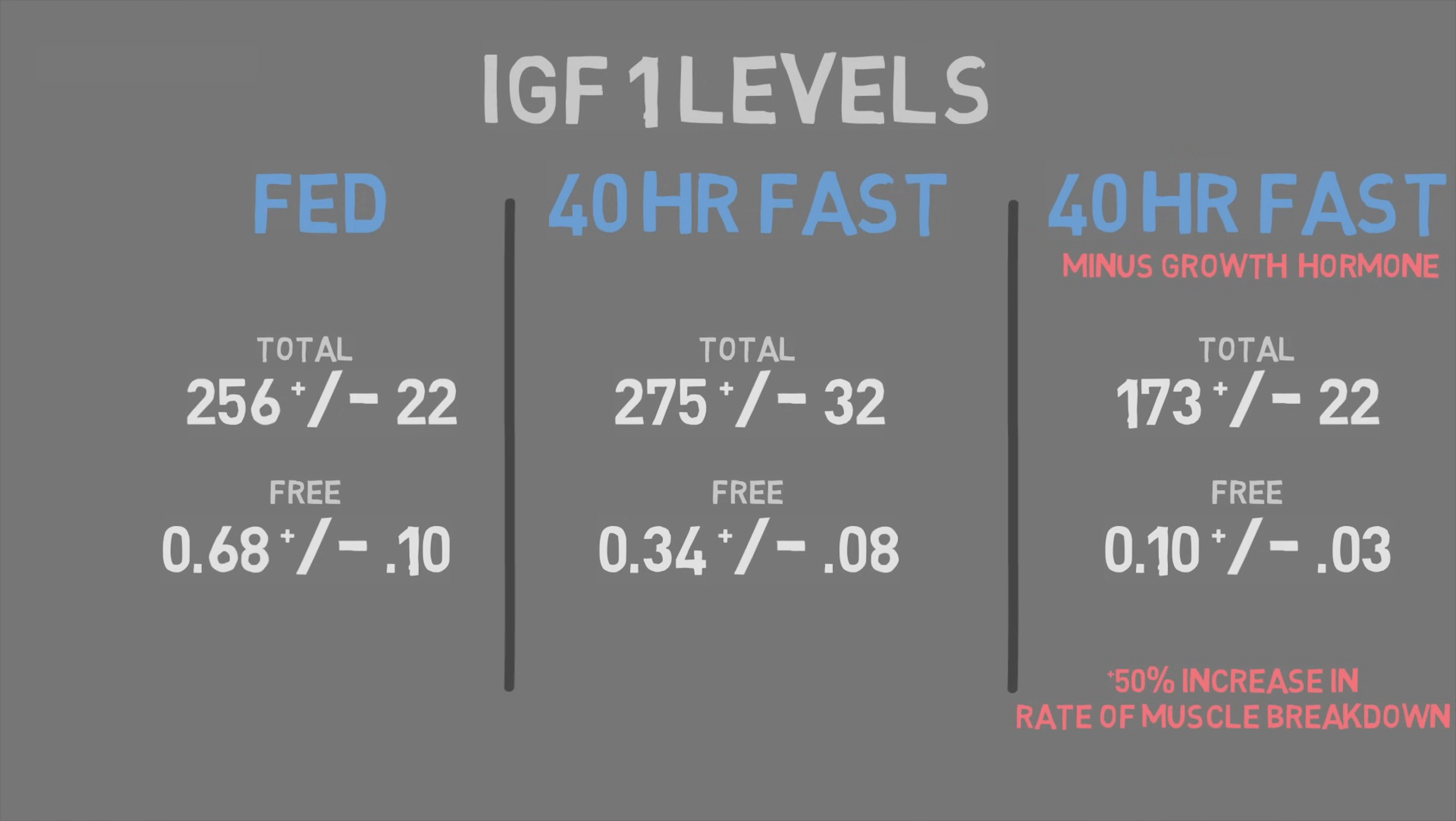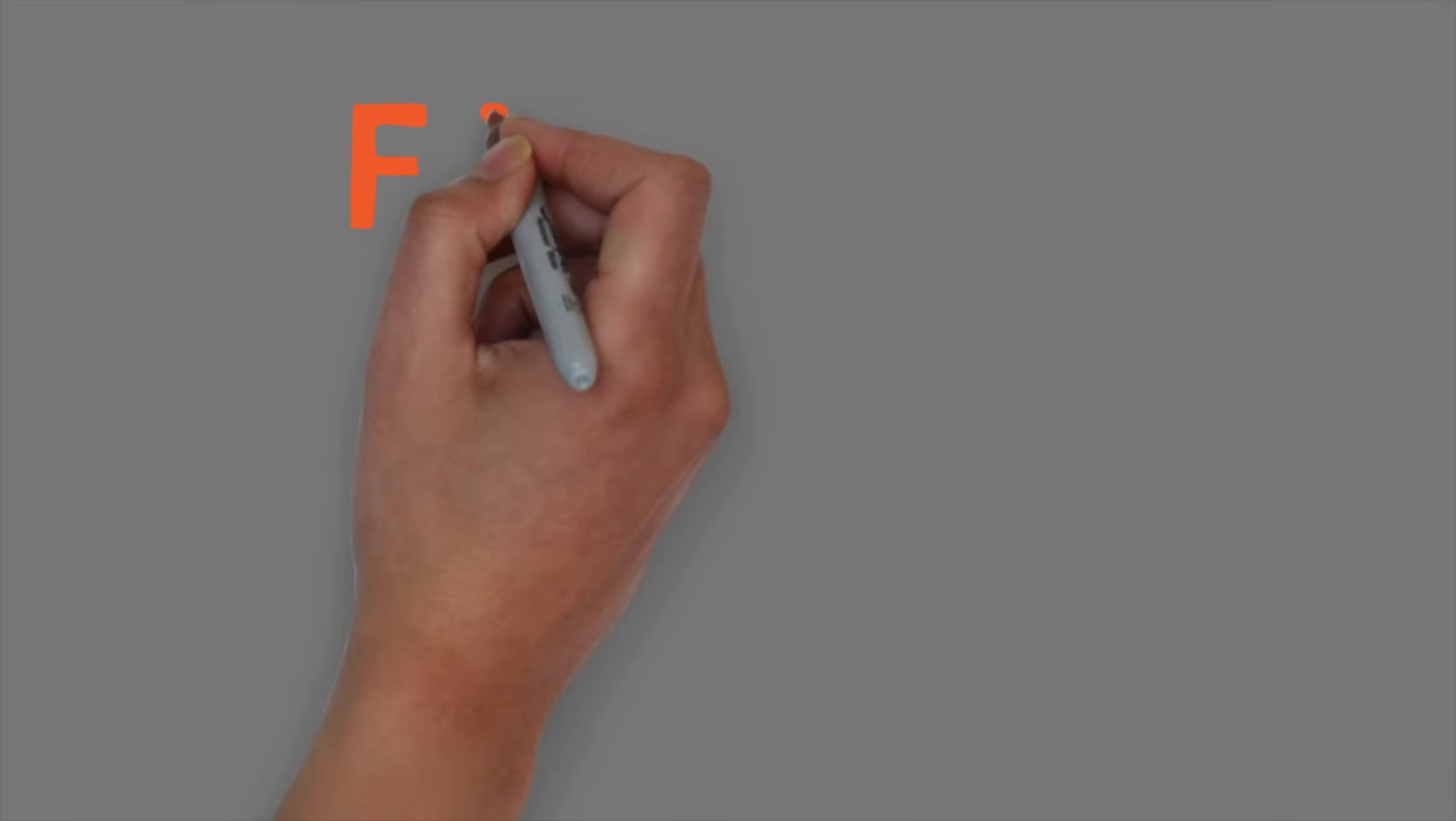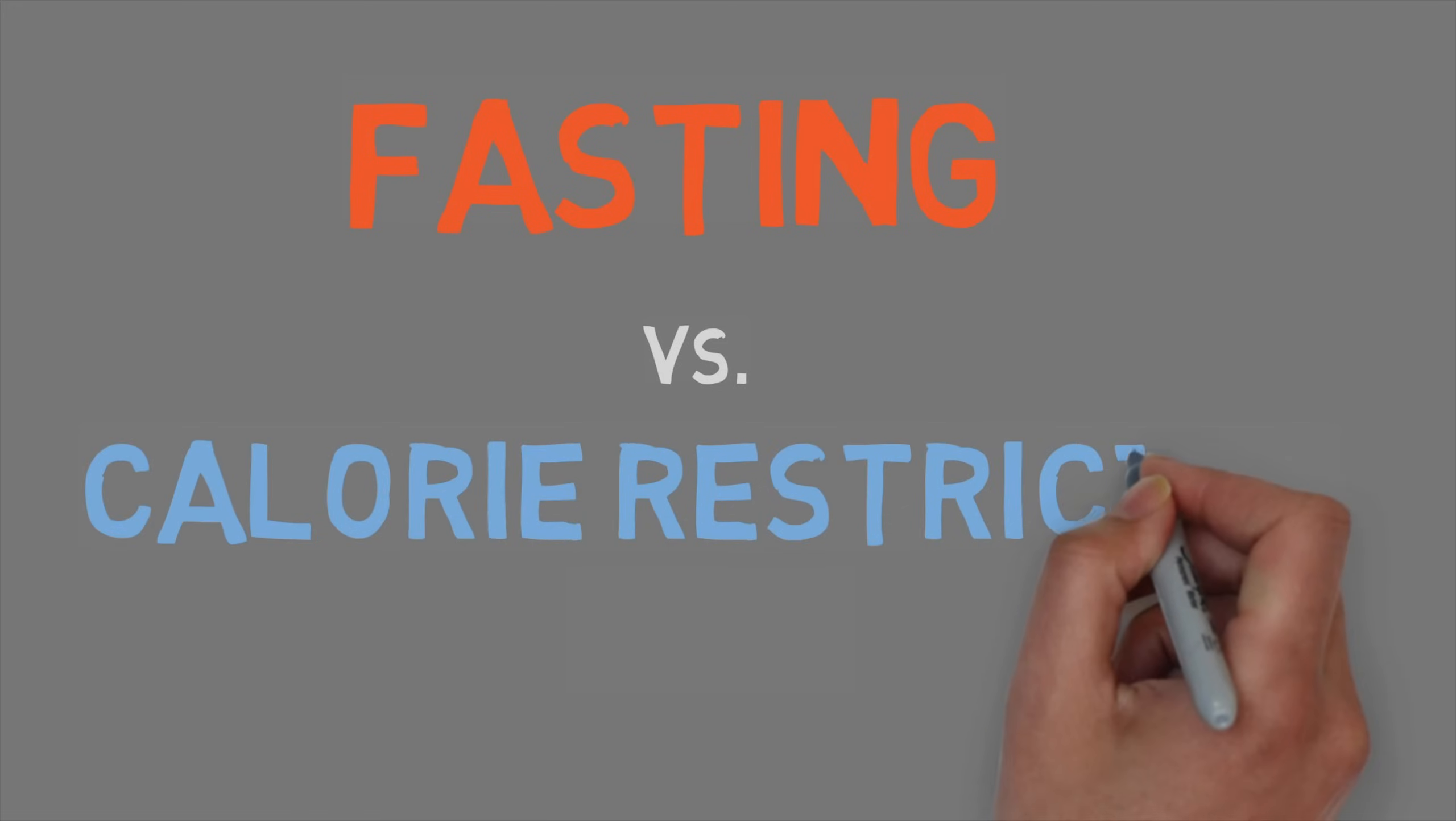So when people tout the benefits of elevated growth hormone, they are missing the point. Since most of the benefits of growth hormone lay in the fact that it becomes IGF-1. IGF-1 levels being propped up thanks to the added growth hormone is what should be really praised. So now, the real question is, do the systems that kick in during fasting do a good enough job of helping maintain lean mass that fasting is a viable option for those who want to lose fat while maintaining their muscle gains?